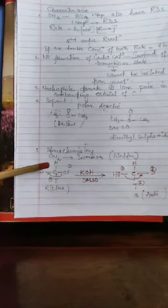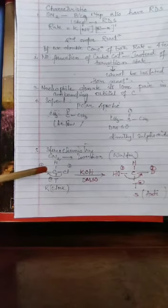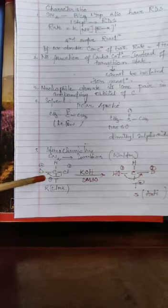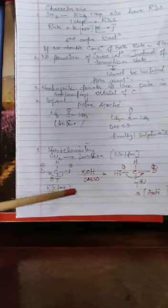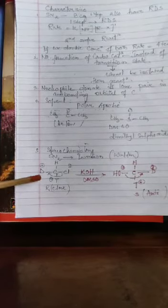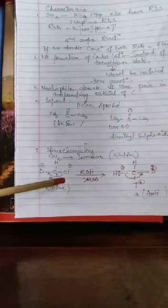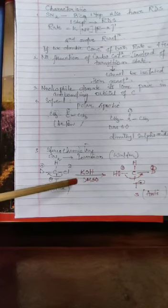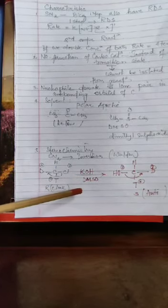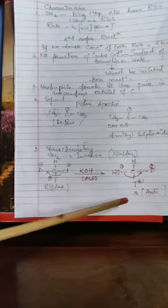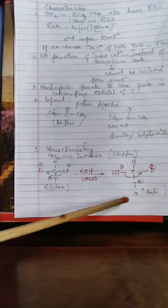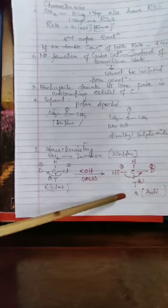Characteristic five of SN2 is stereochemistry. In SN2 we follow Walden inversion. In SN1 it follows inversion but gives racemic mixture. Example: D-configuration compound (D, C, H, Cl) reacts with KOH in dimethyl sulfoxide (DMSO). We get the anticlockwise product — that is inversion only.